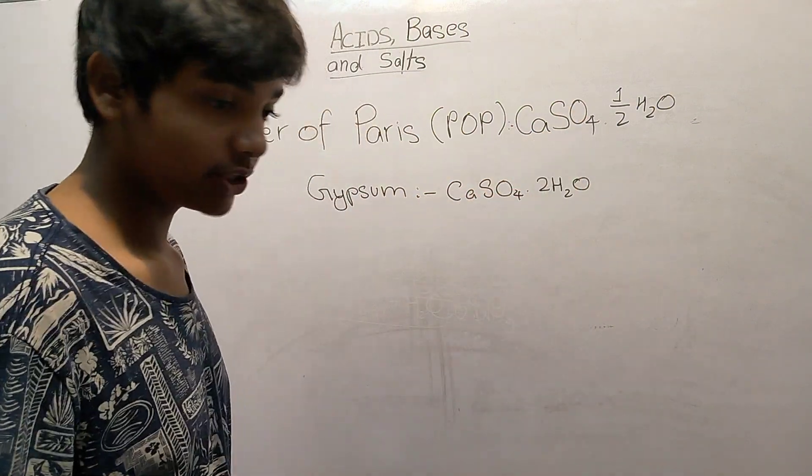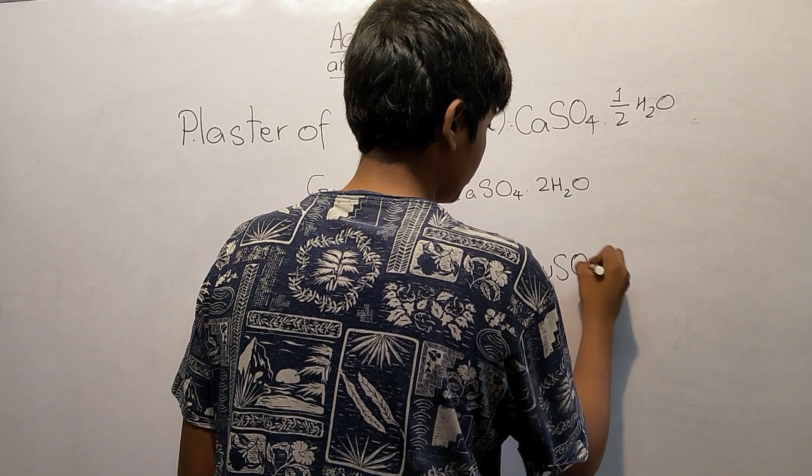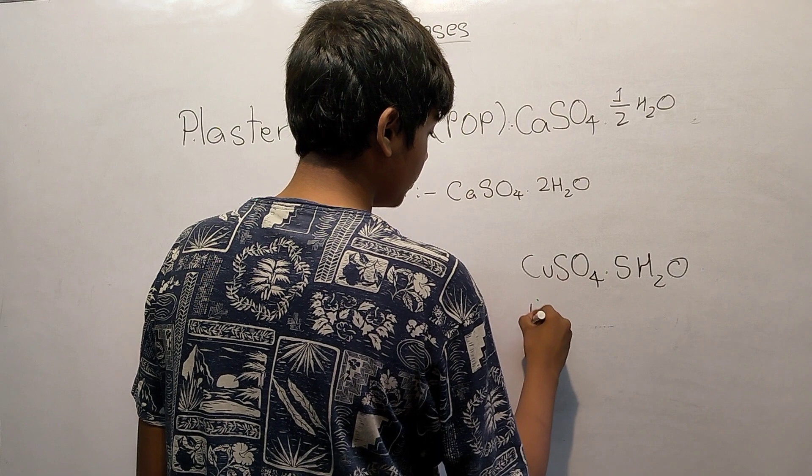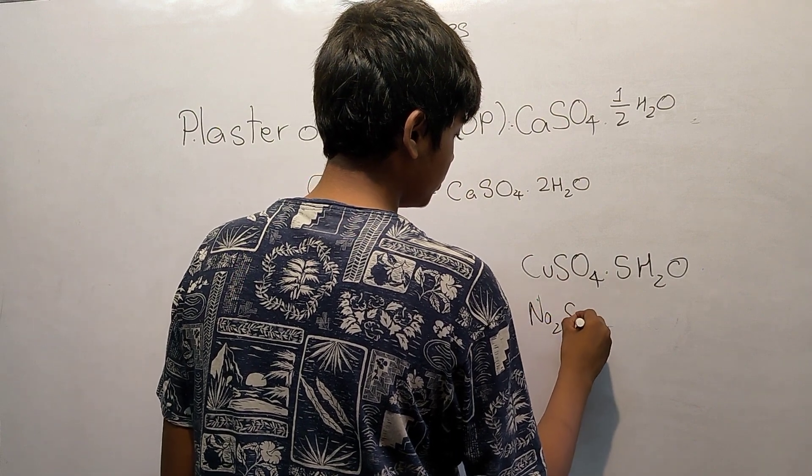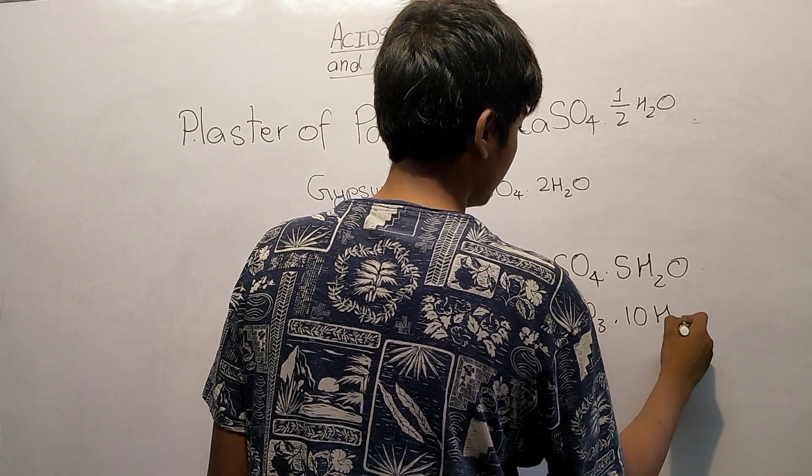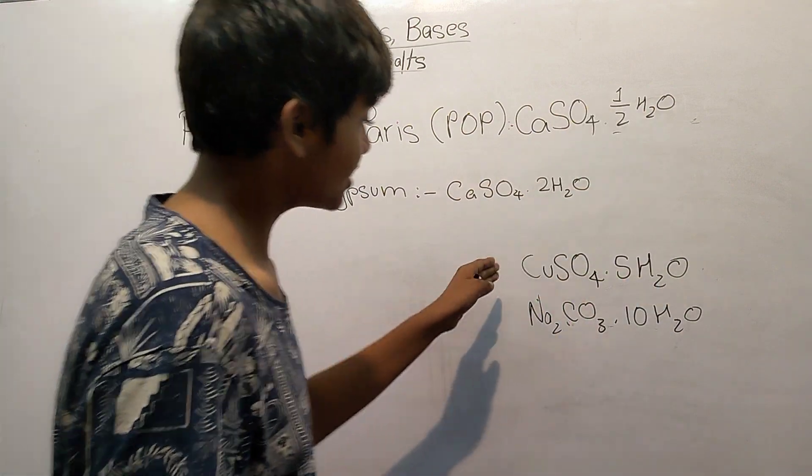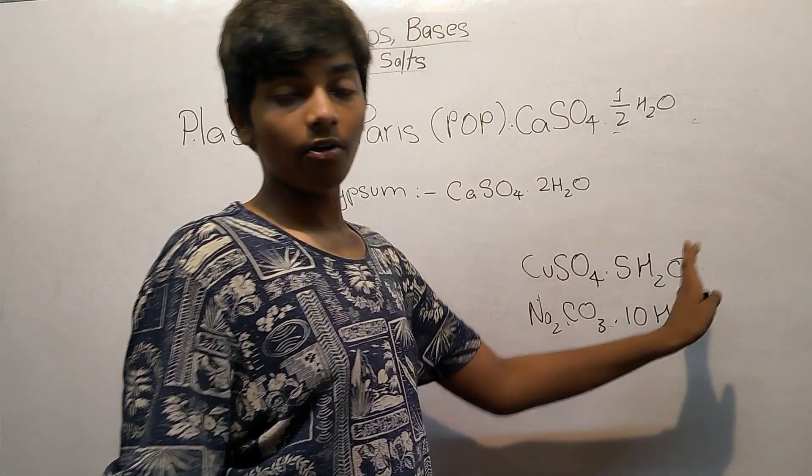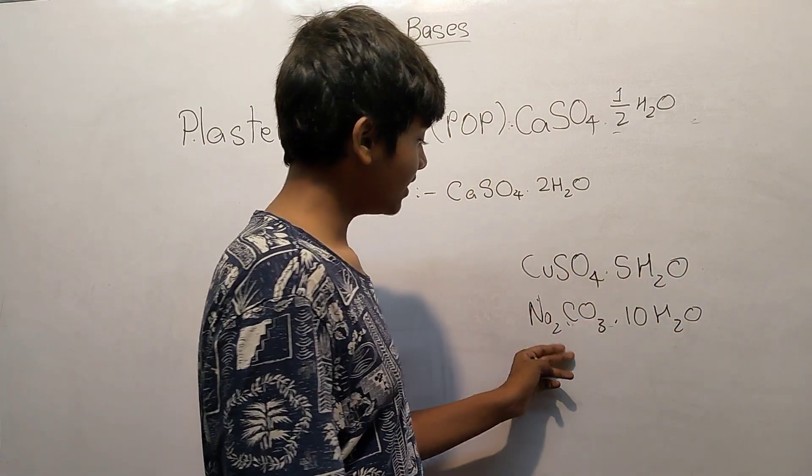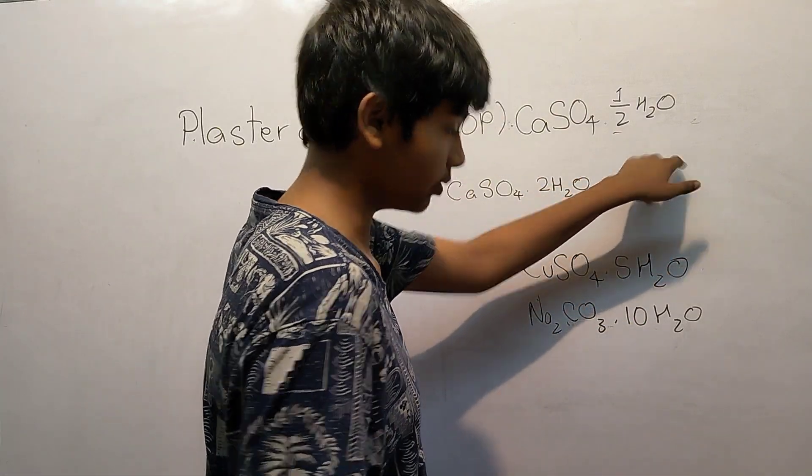Now notice this half H2O. We have seen CuSO4·5H2O which was blue vitriol, and Na2CO3·10H2O. There were whole numbers, but in this case it is a fraction. In copper sulfate we have five water molecules, in sodium carbonate we have ten water molecules, and in Plaster of Paris we have half a water molecule.